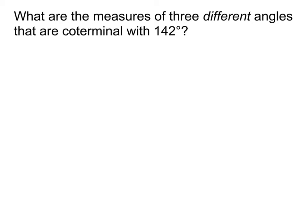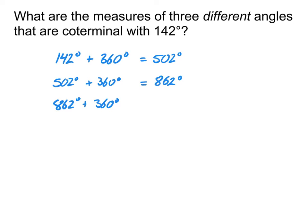And so one way that I can get my answers here is I could do 142 degrees plus 360 degrees, and then I could take that number and add 360 degrees, and then I could take that number and add 360 degrees, and that gives me three different angles that are all coterminal with 142 degrees.